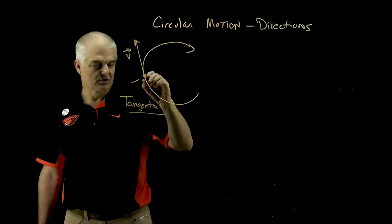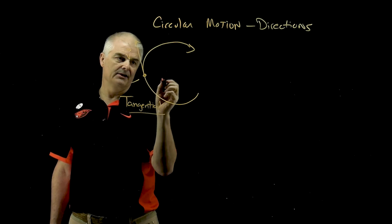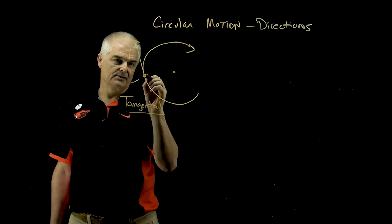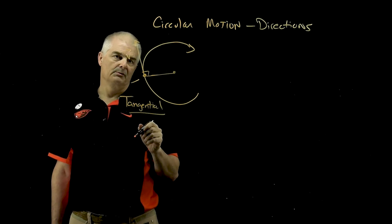and here's a big fancy word. It's moving tangential to the motion. So if it's moving in a circle, this is the tangent, tangential, because it's a 90 degrees angle from the circle. You've got like 90 degrees. It's going to be moving in that direction.